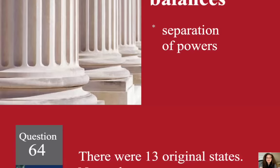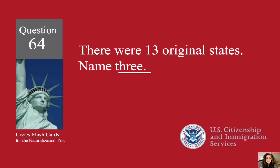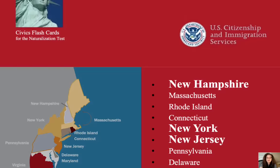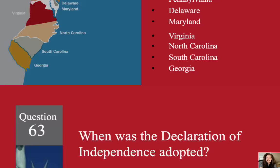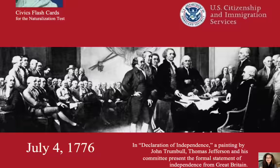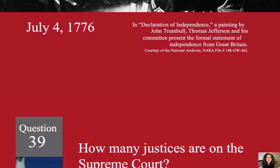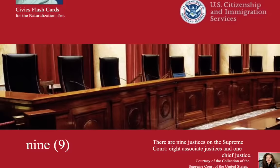There were 13 original states. Name three. New Hampshire, New York, New Jersey. When was the Declaration of Independence adopted? July 4, 1776. How many justices are on the Supreme Court? Nine.